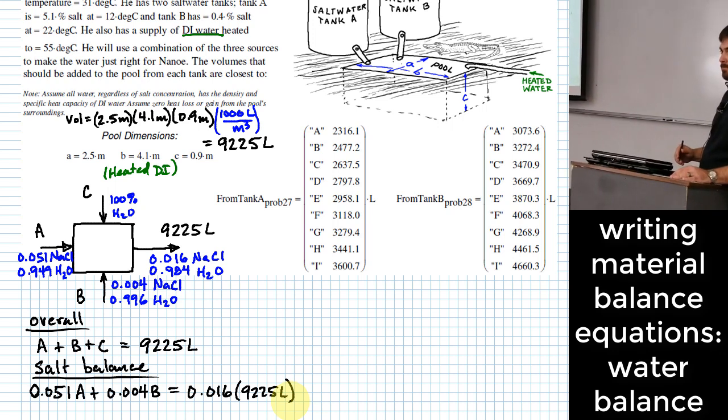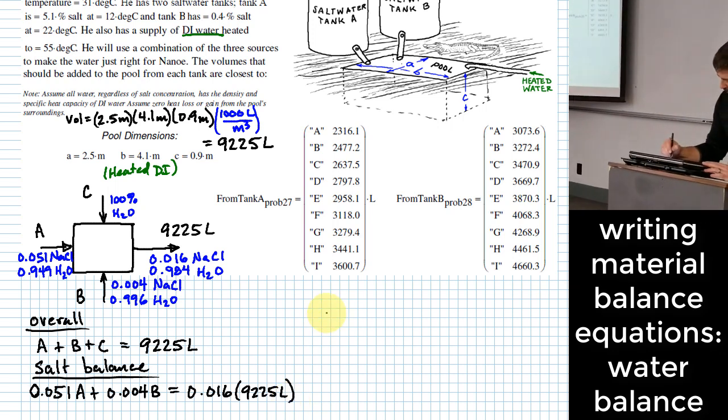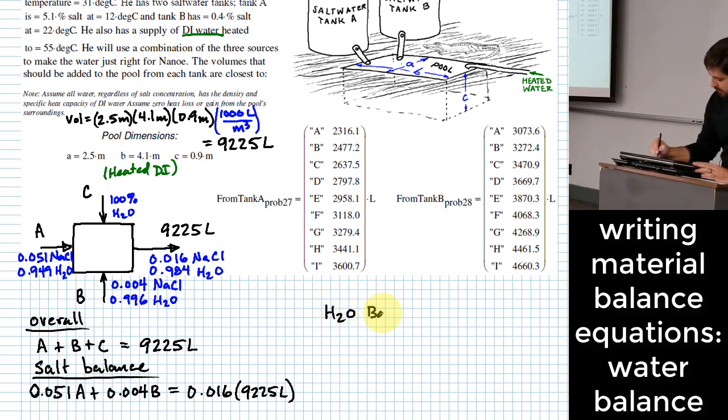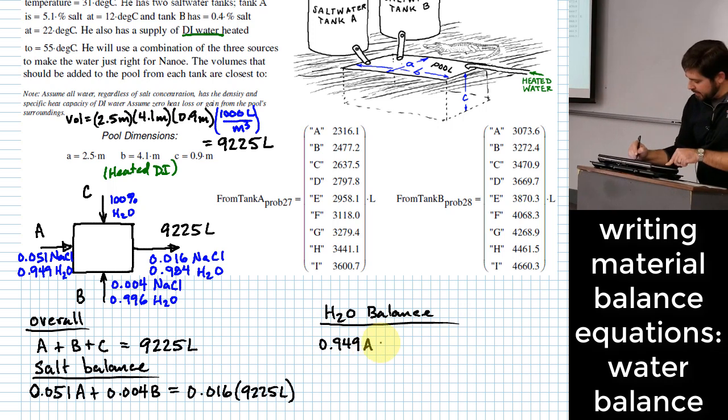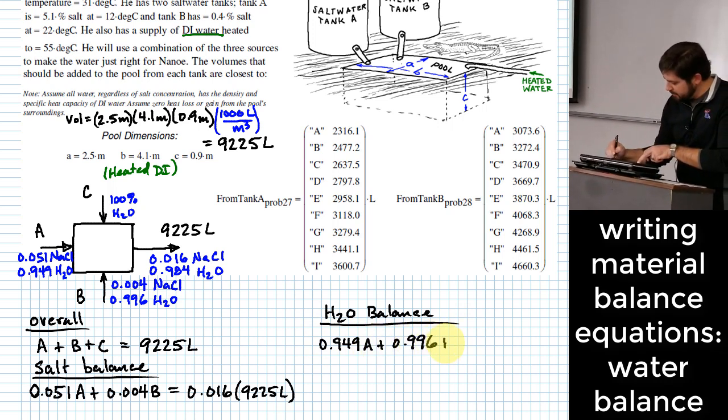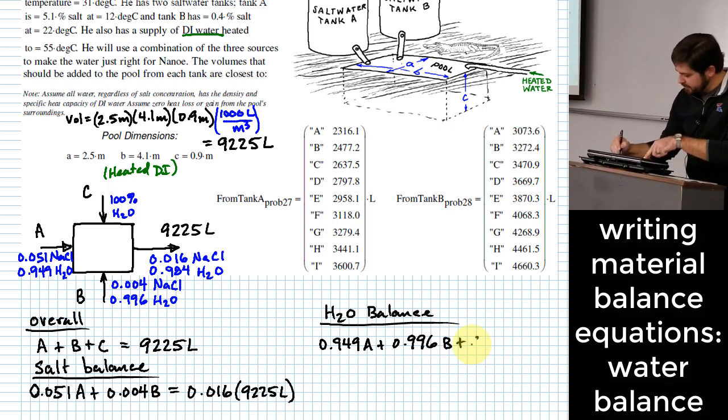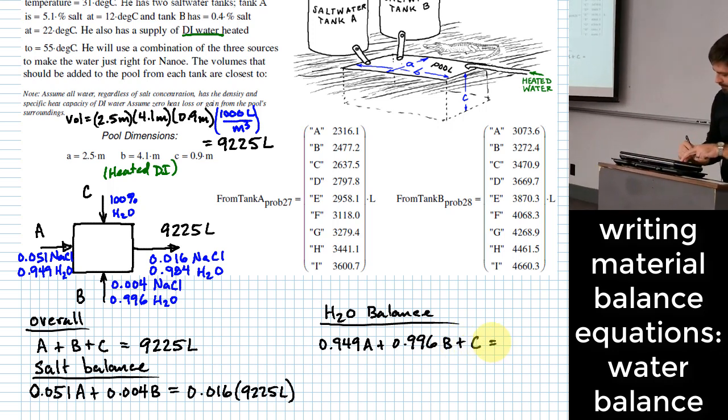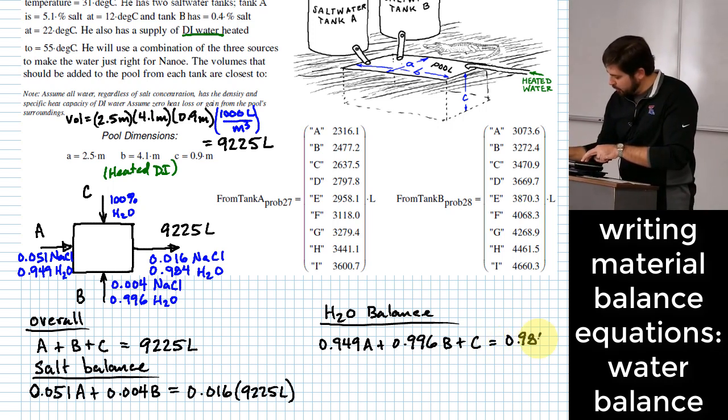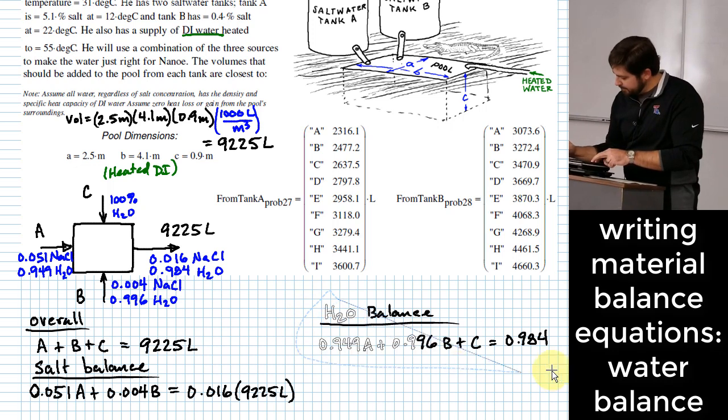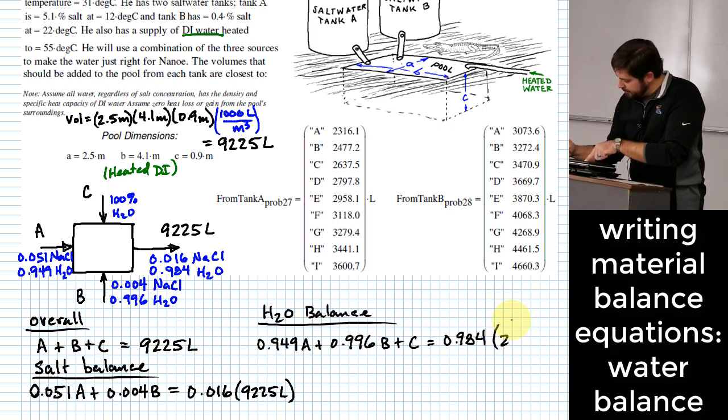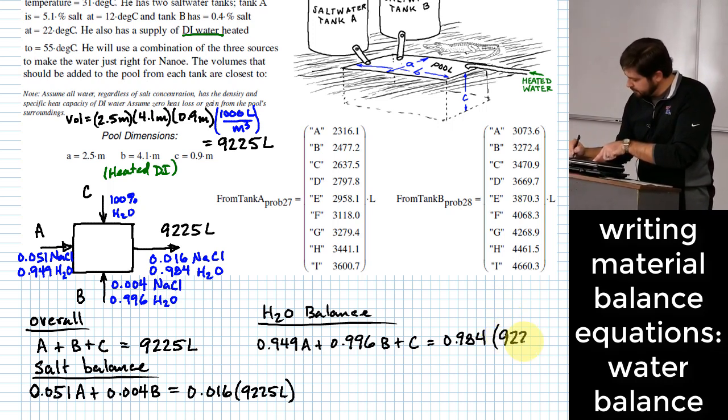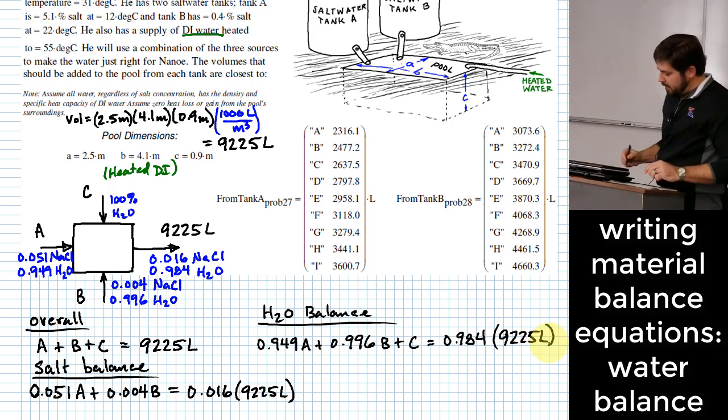Can we write a third one? We can do a water balance if we want. What does that equation look like? So we would have 0.949A plus 0.996B plus C equals 0.984 times 9225 liters.